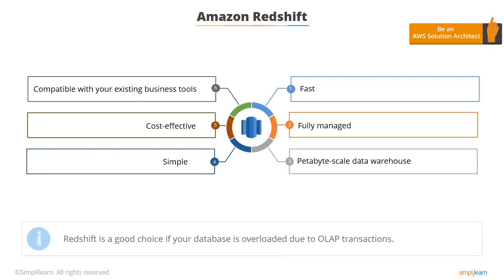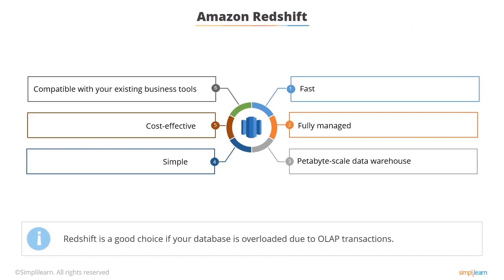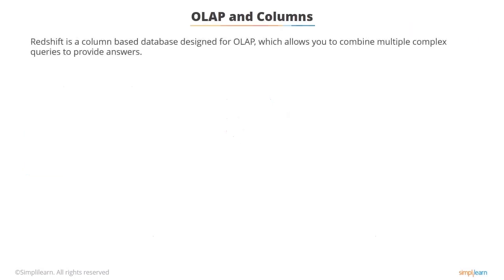Redshift is a great choice if your database is overloaded due to OLAP transactions. Amazon Redshift is designed for OLAP, which allows you to easily combine multiple complex queries to provide answers.